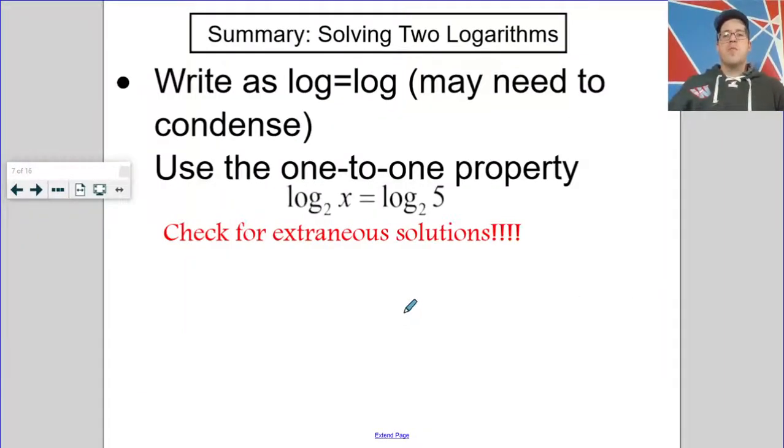All right, here's a summary of that. You want to write it as log equals a log. They have to have the same base and you may need to condense. Then you're going to use the 1 to 1 property. And you do need to make sure that you check for extraneous solutions. Your argument, the inside of your logarithm, cannot be negative.